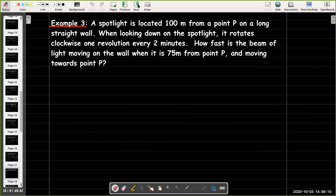In our last example, we have a rotating spotlight. It's 100 meters from a point P on a long straight wall. And, when we're looking down at the spotlight, it's rotating a clockwise orientation. And, it goes one revolution every two minutes. So, we'd like to know how fast is the beam of light moving on the wall when it is 75 meters from point P, and moving towards point P.